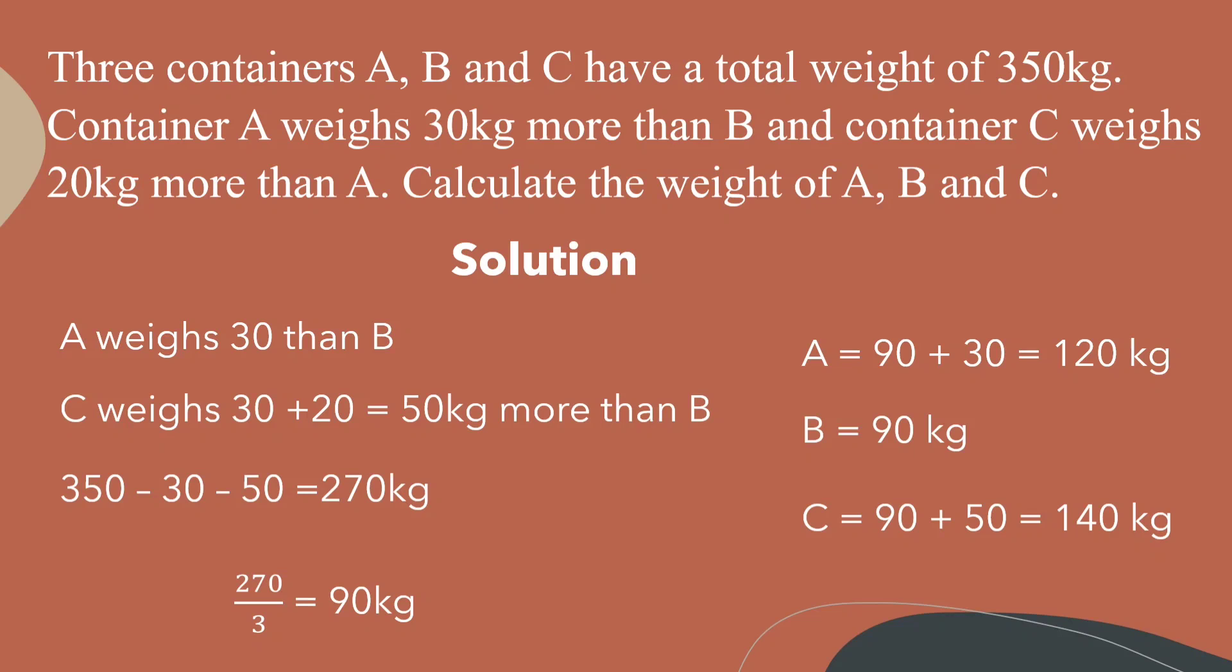But any good problem solver will look back to see if your answer is correct. If I were to sum the weights of containers A, B, and C I will have 120 plus 90 that would give me 210, plus 140 and that would give me 350 kilograms.